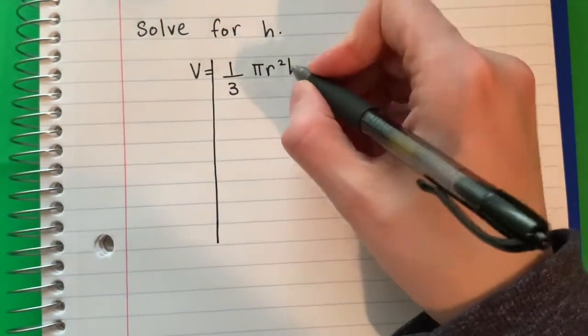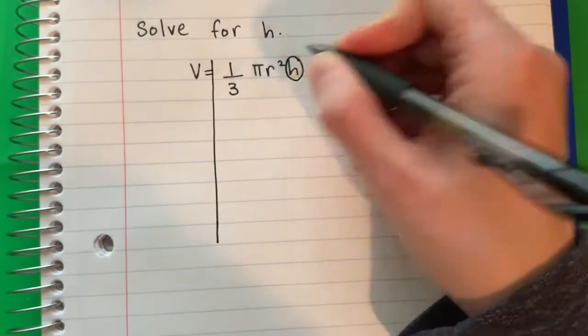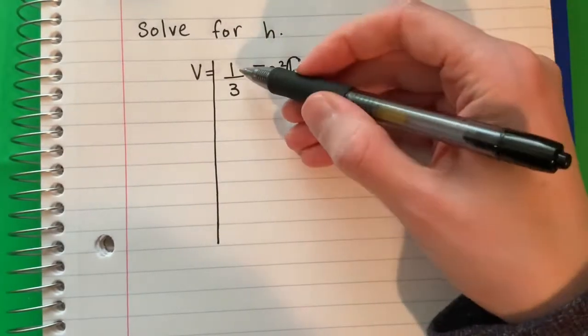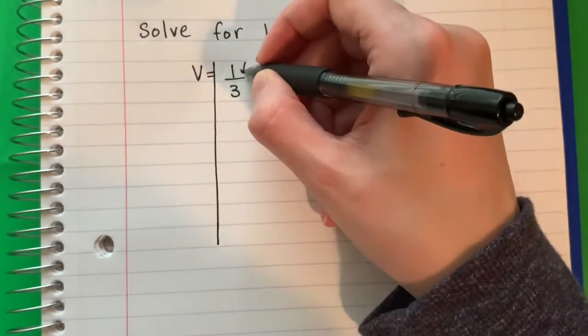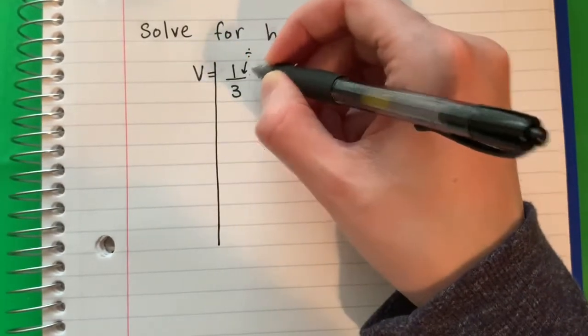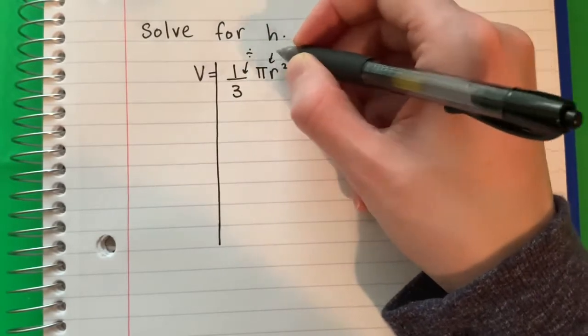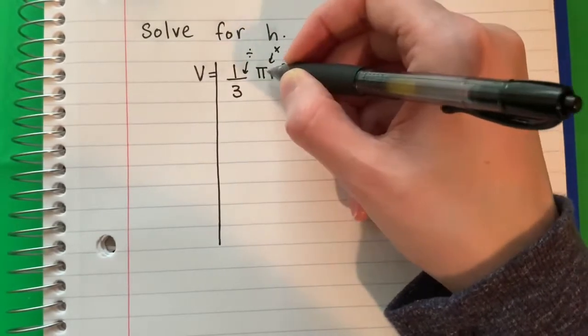I want the h alone, so I'm going to circle h. What is with h? I have 1/3, π, and r squared. Okay, so this 1/3 is a divide because it has the line. The π and the r squared are multiply because there's nothing in the middle.